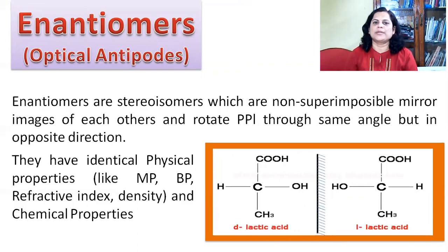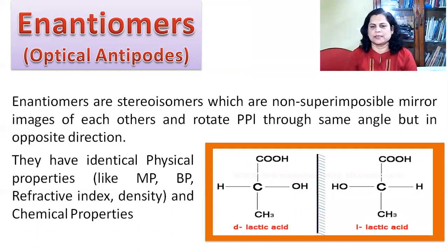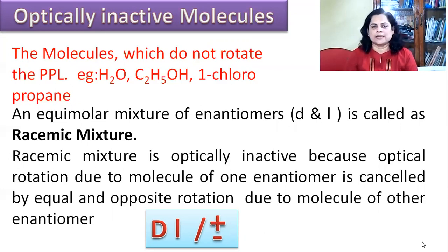Optically active molecules that are non-superimposable mirror images of each other, which rotate the plane polarized light through the same angle but in opposite directions, are called enantiomers — also known as optical antipodes. The dextro and levo forms have identical physical and chemical properties, but show different chemical properties towards optically active molecules. Molecules which do not rotate the plane polarized light are optically inactive — for example, H₂O, ethyl alcohol, and 1-chloropropane. They do not contain asymmetric carbon atoms, so they do not rotate the PPL.